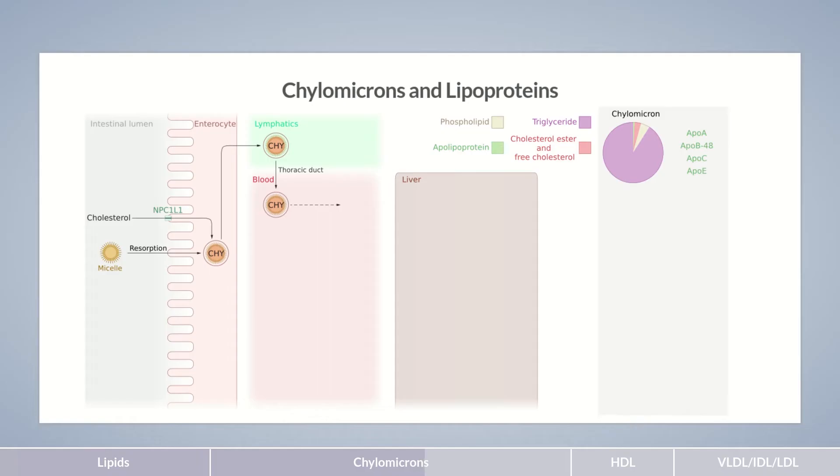They're distinguished and characterized by an important physical attribute – their density. The lipoprotein density – that is, their mass per volume – depends primarily on their share of proteins. The more apolipoprotein in the particle, the higher its density.